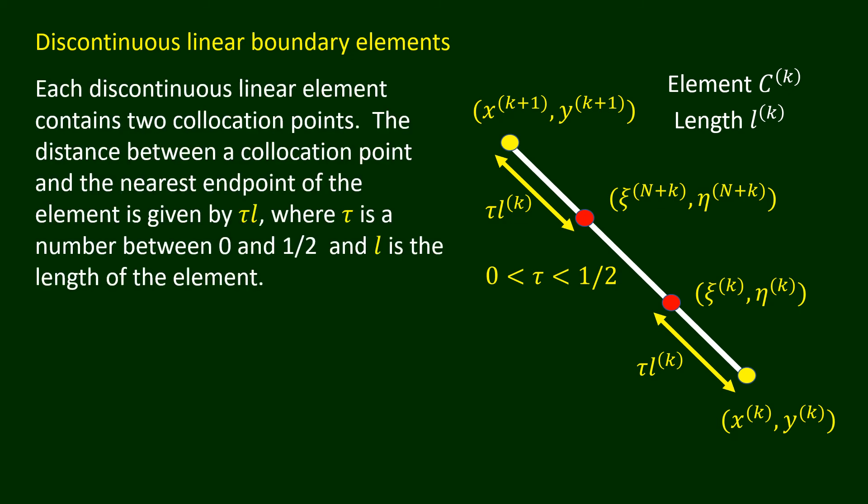Each discontinuous linear element contains two collocation points. The distance between a collocation point and the nearest endpoint of the element is given by tau times l, where tau is a number between 0 and one half and l is the length of the element. The accuracy of the discontinuous linear boundary element method may vary with the parameter tau, and the optimal value of tau may vary from one boundary value problem to another. Some specific boundary value problems solved using tau equals one quarter show that the overall accuracy of the discontinuous linear elements is better than that of the constant elements, for the same number of boundary elements or unknowns on the boundary.